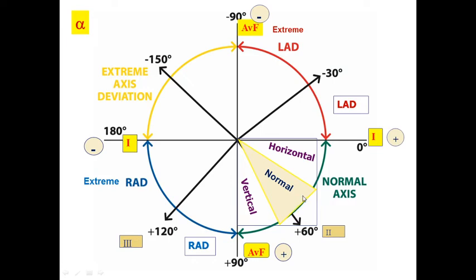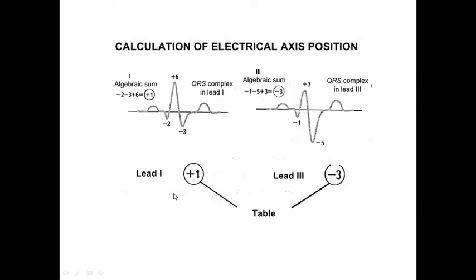Horizontal, normal, and vertical positions may all be within normal range. For example, a horizontal position of the heart is common in hypersthenic constitutional type patients, while a vertical position is common in asthenic type patients. If the alpha angle is less than 0 to minus 30 degrees, we recognize this as left axis deviation. If the alpha angle is between +90 and +120 degrees, it is right axis deviation. If more than 120 degrees, it is extreme right axis deviation.